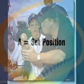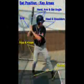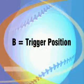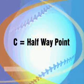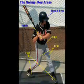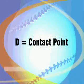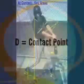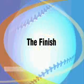Now to match those, here we go. A is for the setup position, waiting for the pitch. B is the triggering position — the pitch is on the way. C is the valuable halfway point of the swing, where we measure a lot of elements. D is the contact point out in front. And finally, the finish is the completion of the swing.